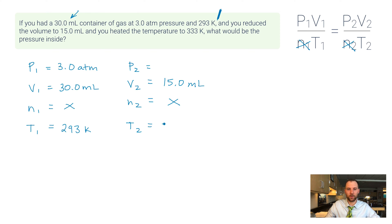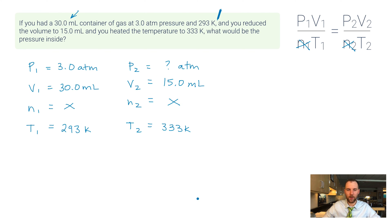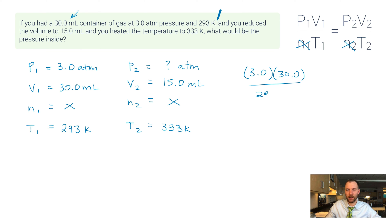Continuing: the volume is reduced to 15.0 milliliters — that's v2 = 15.0 mL. The temperature is heated to 333 Kelvin — t2 = 333 K. We're solving for p2, the new pressure, which will be in atmospheres. Milliliters match and Kelvins match, so no unit conversions are needed. Now I'll plug these into the formula: p1v1/t1 = p2v2/t2, so 3.0 × 30.0 / 293 on the left side.